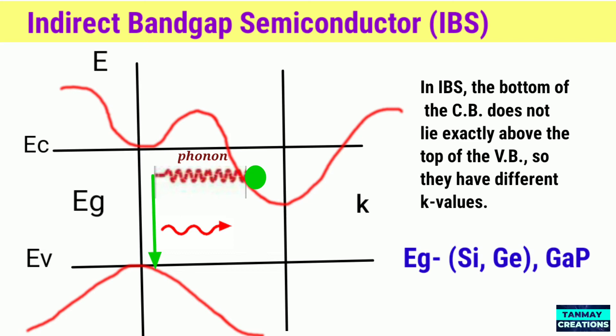This is possible but it requires the electron to interact not only with the photon to gain energy, but also with a lattice vibration called a phonon in order to either gain or lose momentum. The indirect process proceeds at a much slower rate as it requires three entities to interact: an electron, a photon, and a phonon.